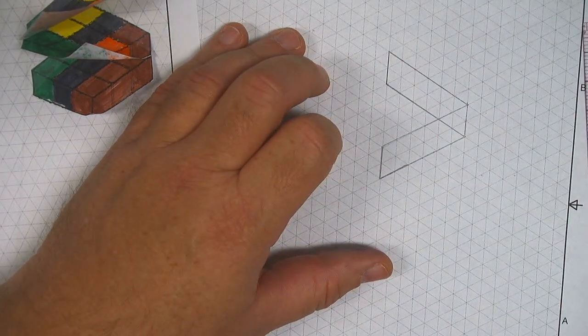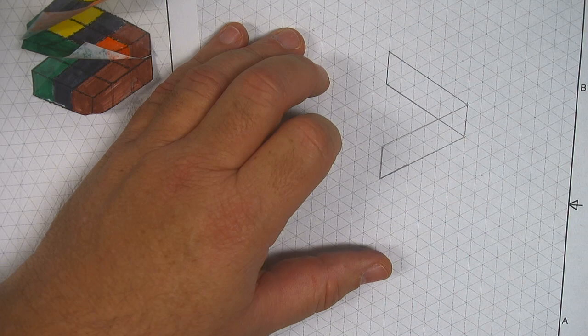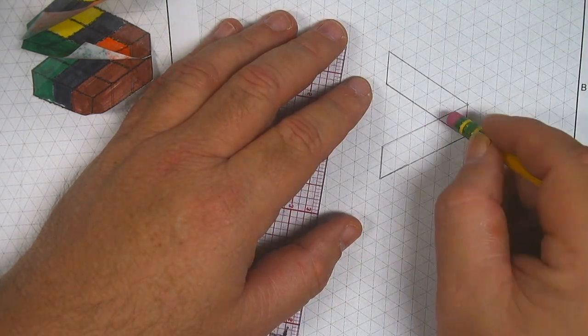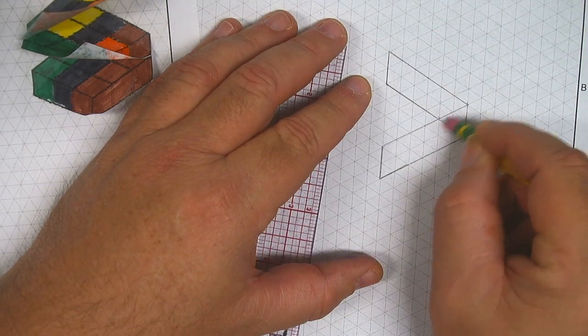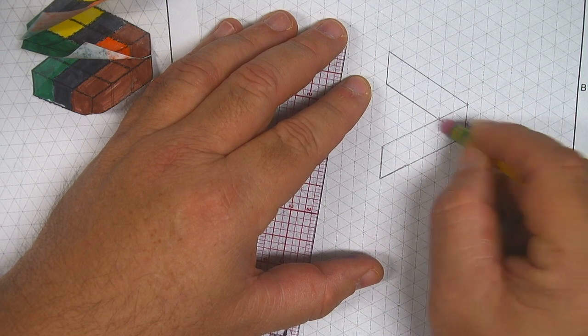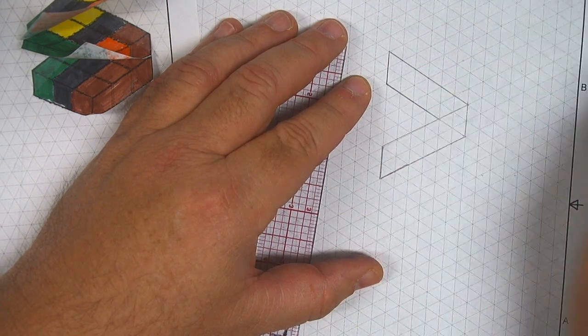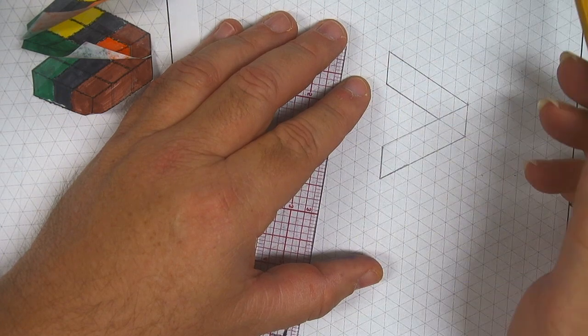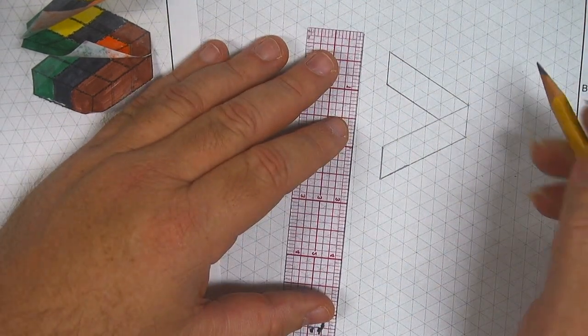All right, so that is part of my cube. And so that I can see this better, I'm going to start erasing some lines here. And of course, I'll do more erasing as time goes along.